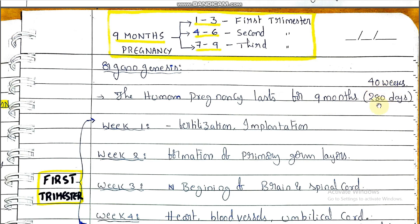During 280 days or 40 weeks, complete embryonic development takes place. The nine months of pregnancy are divided into three trimesters. The first, second, and third months are called the first trimester. The fourth, fifth, and sixth months are the second trimester. The seventh, eighth, and ninth months are called the third trimester.